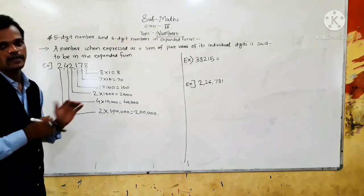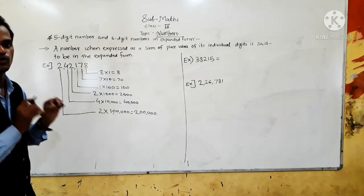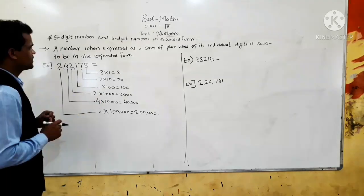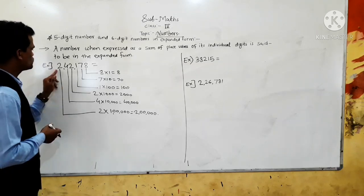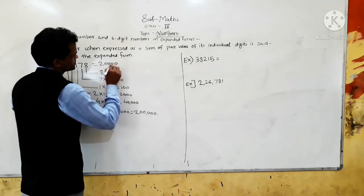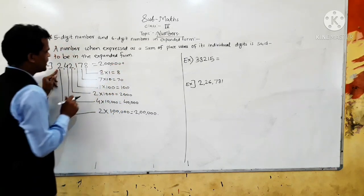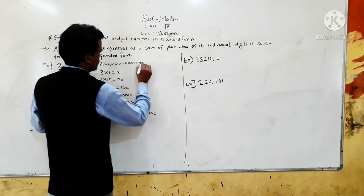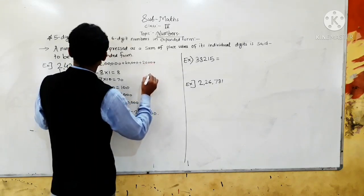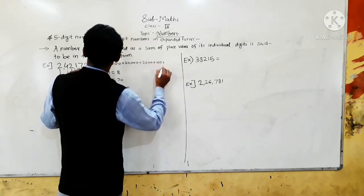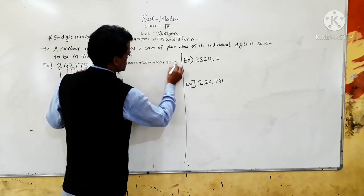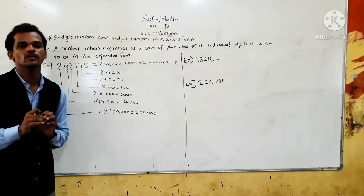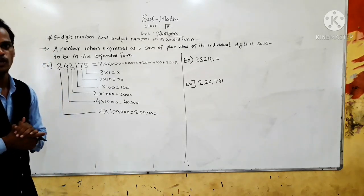Now I am going to write that number in the expanded form. You have to write the number in the form of the sum of the place values of each digit. Writing the number in the expanded form: the place value of this 2 is 2 lakh. So, 2,00,000 + 40,000 + 2,000 + 100 + 70 + 8. This number is now written in the expanded form — as the sum of the place values of each digit.